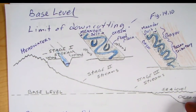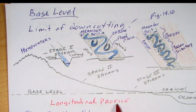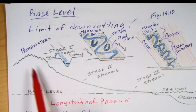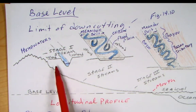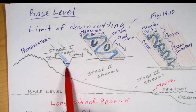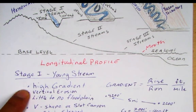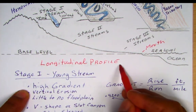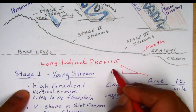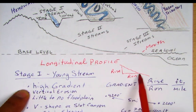Base level is the limit of down cutting, and this is figure 14-10 in your text. The longitudinal profile shows how streams change as they go from the headwaters to the mouth of the river. At the headwaters you'll see stage one streams, which are younger and have V-shaped valleys. They have a high gradient, meaning they're steep — think of gradient as the rise over the run, basically describing how steep the slope is, measured in feet of elevation change per mile.